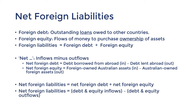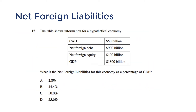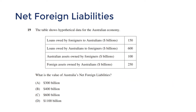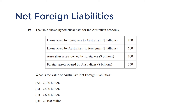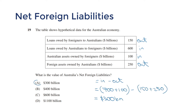These formulas will help you with HSC questions such as 2019's question 12. To calculate net foreign liabilities as a percentage of GDP, add up net foreign debt and equity then divide by GDP — that gives answer D. In 2016's question 19, it's a matter of figuring out which items are inflows and outflows, then running the figures through the formula. Loans owed by foreigners to Australians are outflows; loans owed by Australians to foreigners are inflows. Taking inflows minus outflows, net foreign liabilities add up to $300 billion — the answer is A.